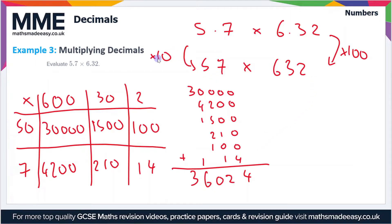So we get 36,024. But at the start we multiplied by 10 and then by 100, so that's 10 times 100 in total which is 1,000. So we have to divide by 1,000 here. So we've got 36,024. If we divide by 1,000, that gives us 36.024 as our final answer.